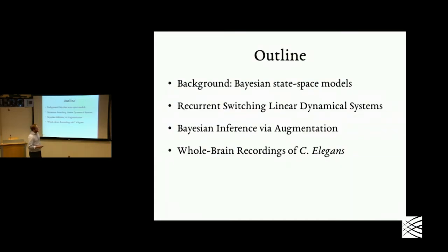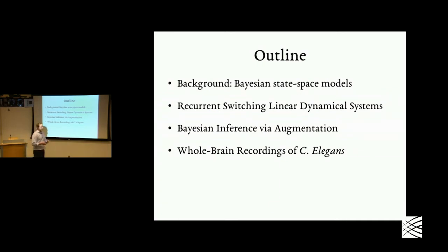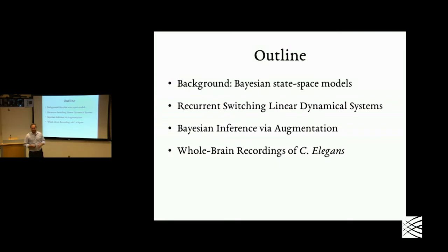Let me give you a brief outline. I'll start with a primer on Bayesian state-space models in general, building up the foundation to understand all the pieces of the recurrent SLDS. Once we've done that, I'll introduce the RSLDS and talk about one way of doing inference via an augmentation technique. Then I'll finish by showing you some recordings of C. elegans. If there are questions throughout, feel free to raise your hand and interrupt — I'm happy to take questions along the way.